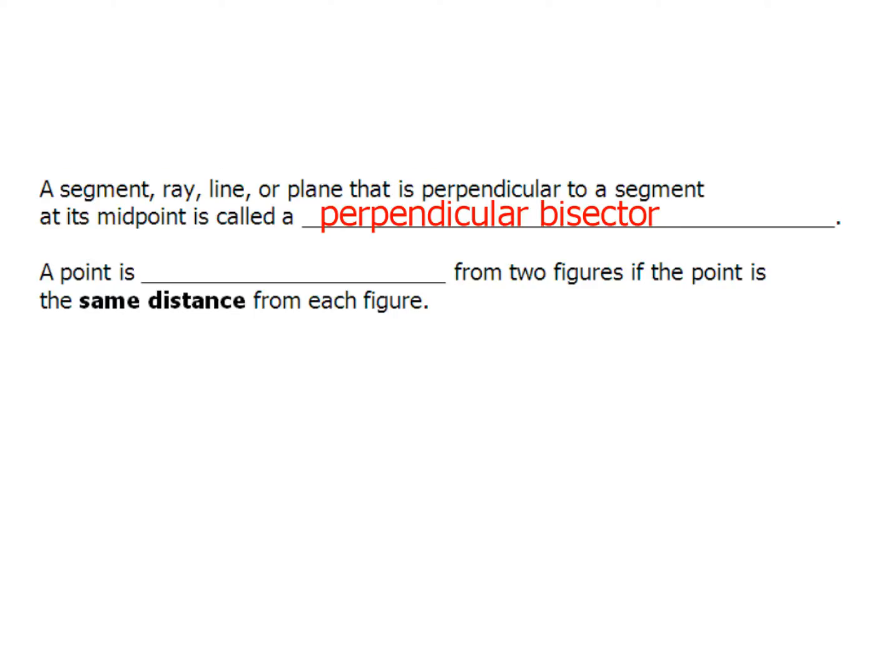The first of these words is going to be perpendicular bisector. It is a segment, ray, line, or plane that is perpendicular to a segment at its midpoint. That is called a perpendicular bisector and a point is going to be called equidistant from two figures if that point is the same distance from each figure. Now these two pieces right here, what that's going to kind of mean, let's talk first about the perpendicular bisector.